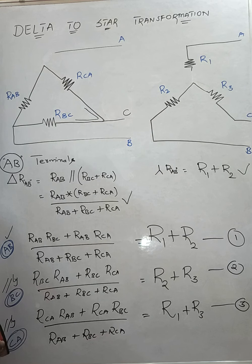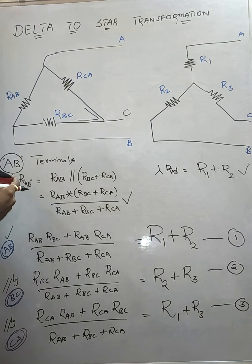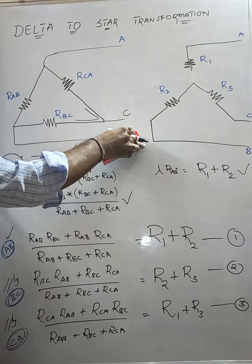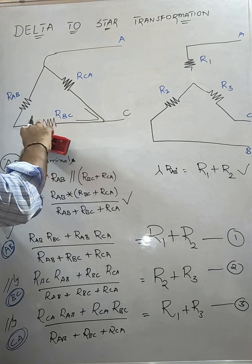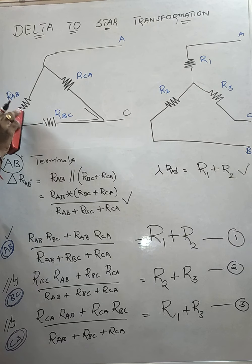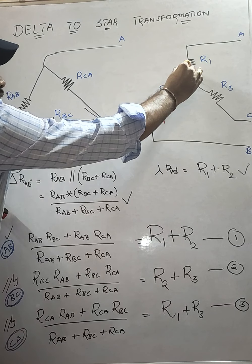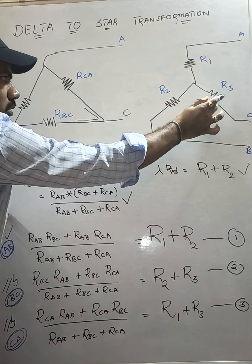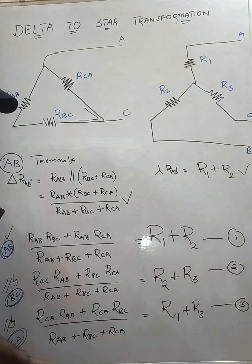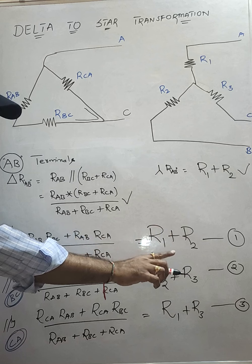In a similar fashion, find the equivalent across C, A terminals. Considering C, A terminals and removing the third wire, R_AB plus R_BC are in series, and R_CA is in parallel. In the star connection, removing that wire gives R1 plus R3. Equating, we get: R_CA into (R_BC + R_AB) divided by (R_AB + R_BC + R_CA) equals R1 plus R3. This is the third equation. So we now have three equations — one for each terminal pair.